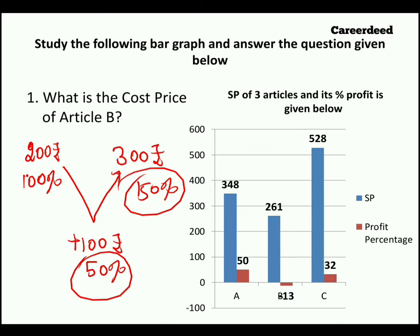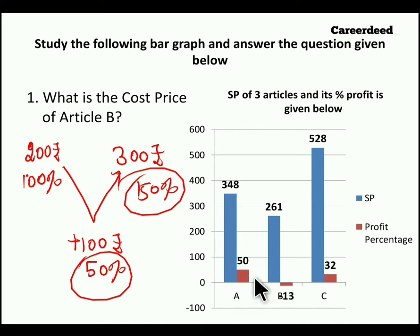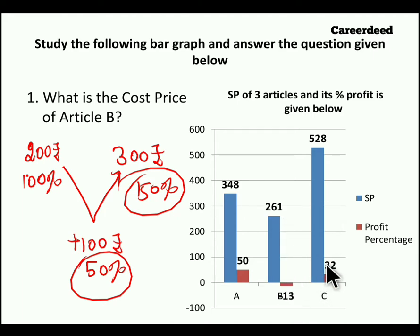We are going to apply the same protocol for this problem. For article A, 348 rupees is selling price with 50% profit, so selling price is 150 percent. For article B, selling price is 100 minus 13, which is 87 percent. For article C, 100 plus 32, which is 132 percentage.